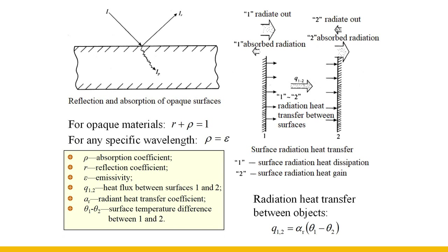The greater the radiation capability of a material, the greater its absorption capability of incident radiation — this is the emissivity relationship. The absorption and reflection properties of materials for thermal radiation mainly depend on the color, nature (conductor or non-conductor), and smoothness of the surface. For short-wave radiation, color plays a dominant role. For long-wave radiation, material properties play a dominant role.